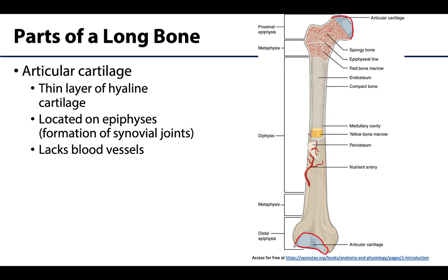This is a really important point, so I'm going to put a little star next to it: articular cartilage, like most cartilage, is mostly avascular. So if there is damage to this articular cartilage, it is very slow to heal — unlike bone, which heals pretty quickly. If you have damage to the articular cartilage, this can lead to osteoarthritis, and we'll talk about the different types of arthritis when we're discussing joint basics.